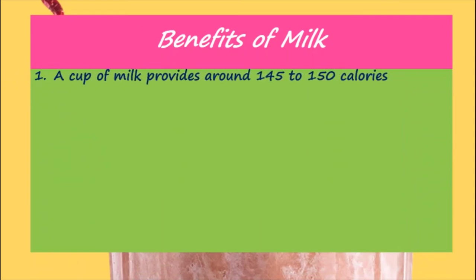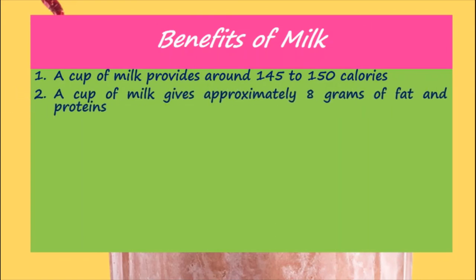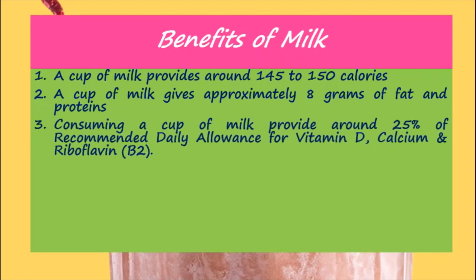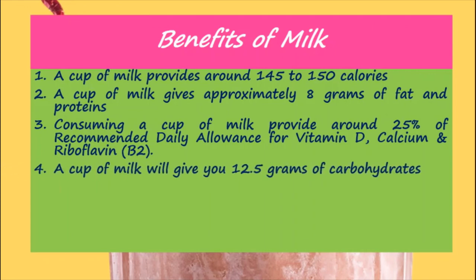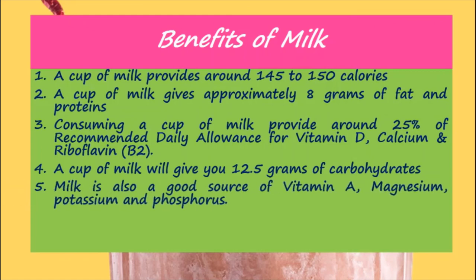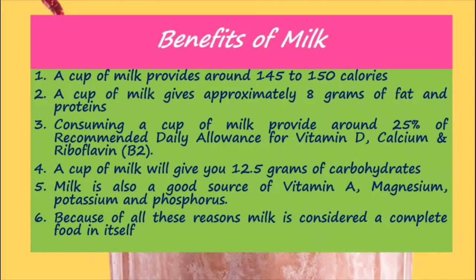A cup of milk provides around 145–150 calories and approximately 8 grams each of fat and protein. Consuming a cup of milk provides around 25% of the recommended daily allowance for vitamin D, calcium, and riboflavin. A cup of milk will give you 12.5 grams of carbohydrates. Milk is also a good source of vitamin A, magnesium, potassium, and phosphorus. Because of all these reasons, milk is considered a complete food in itself.